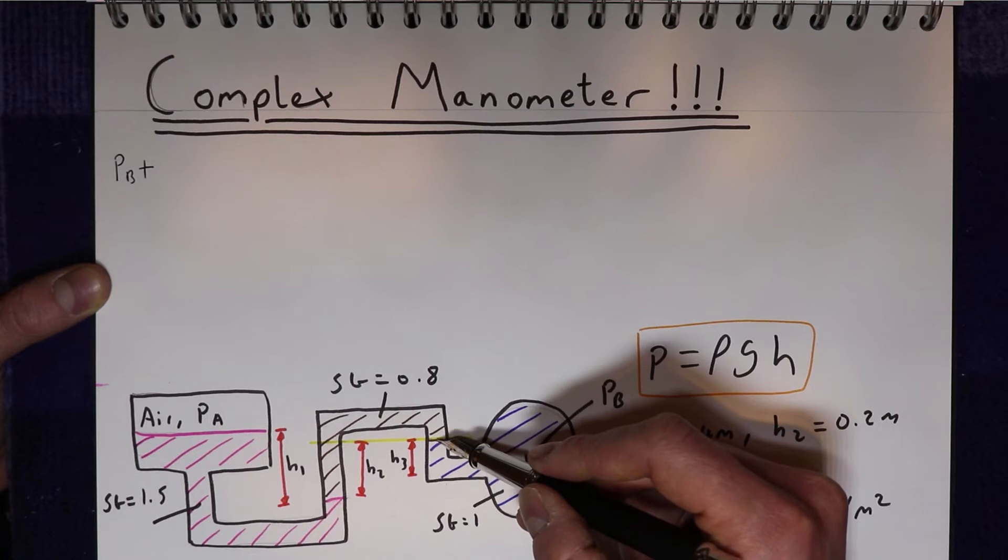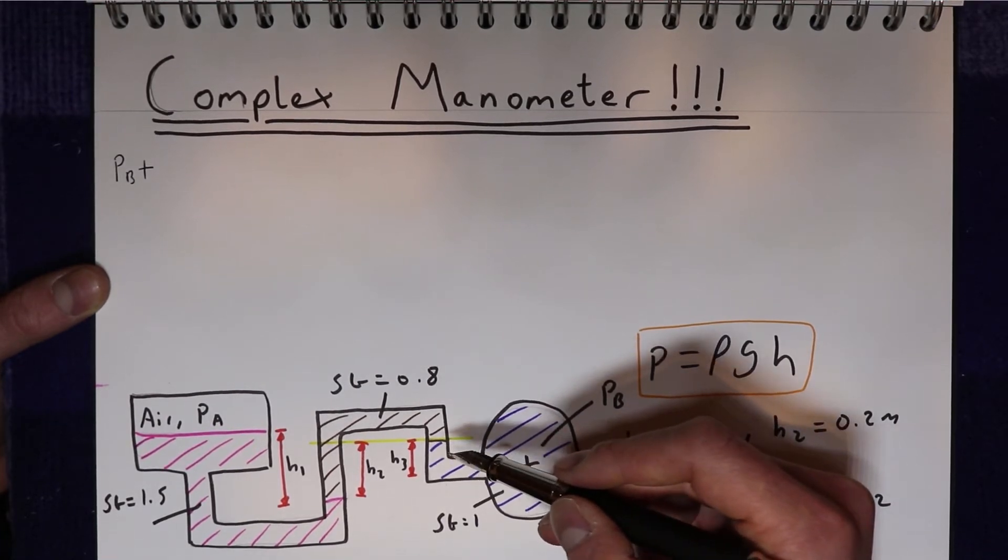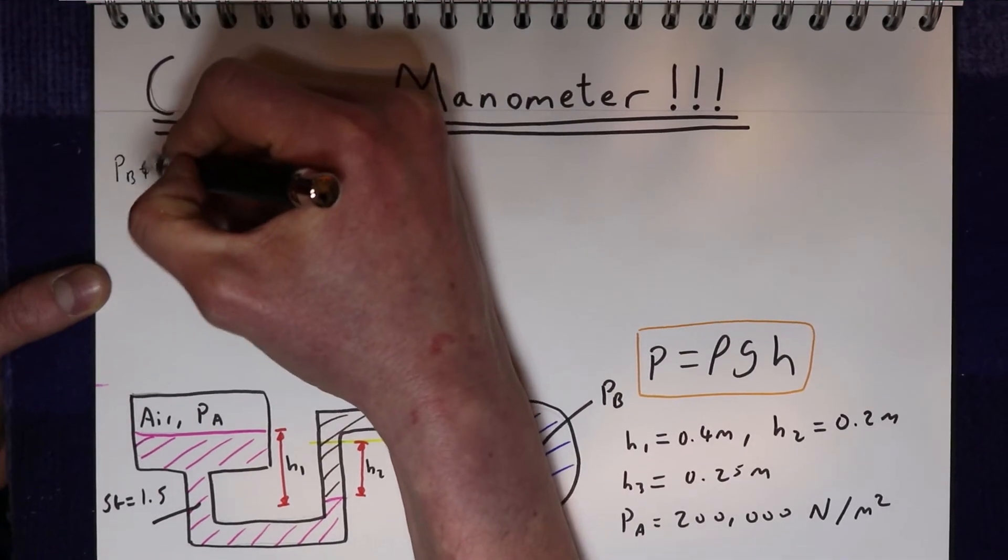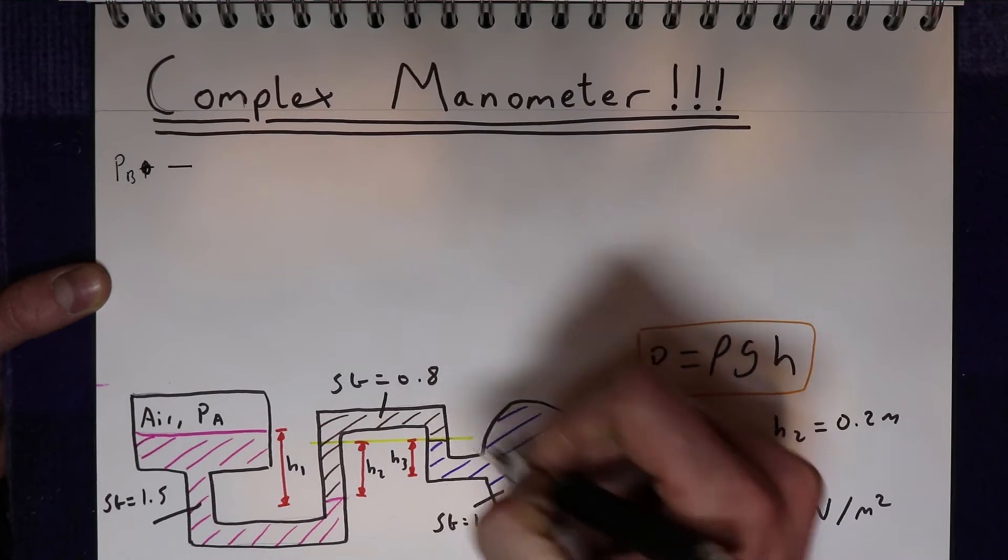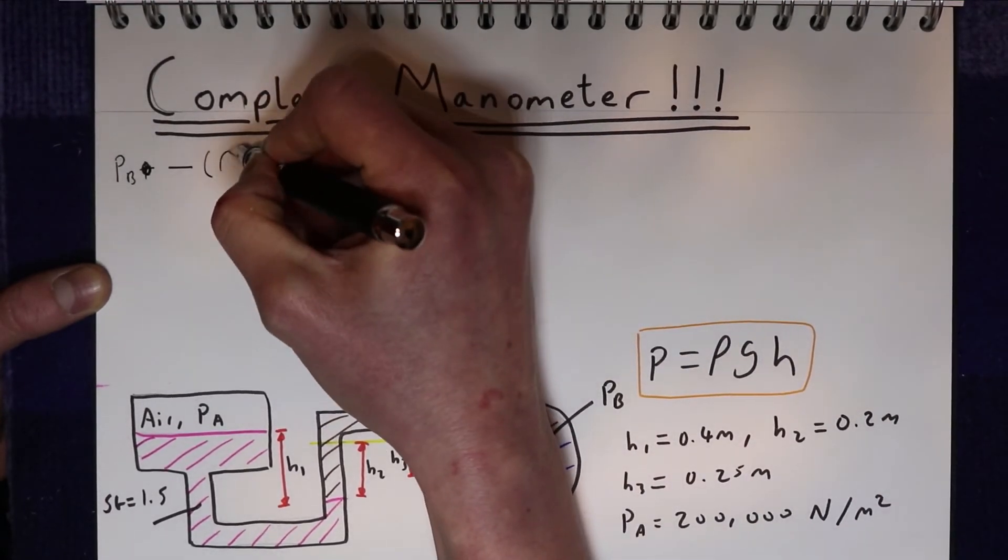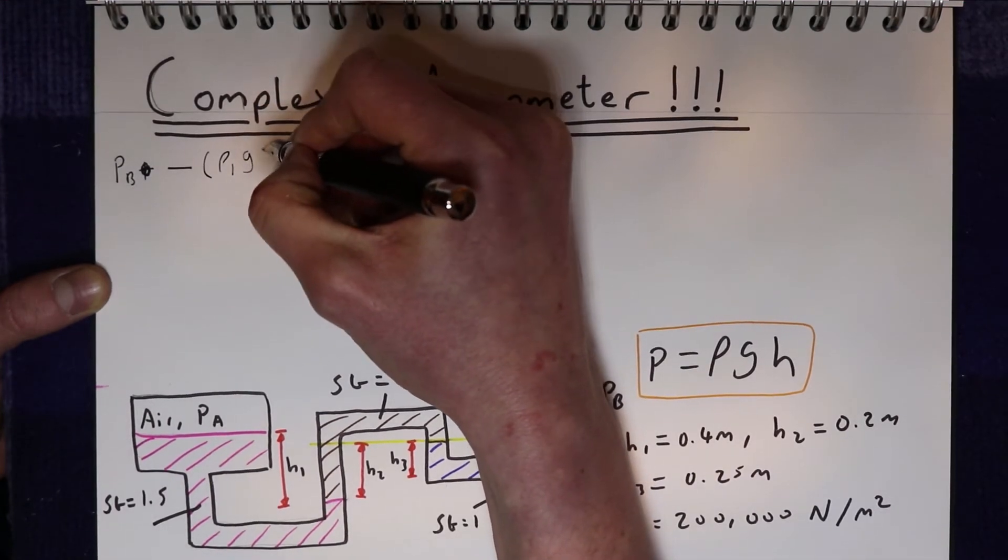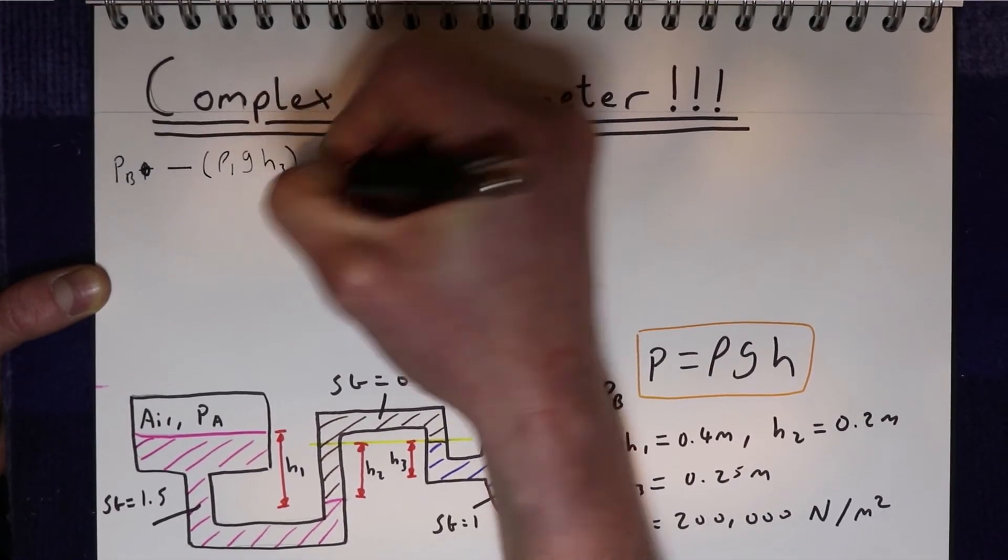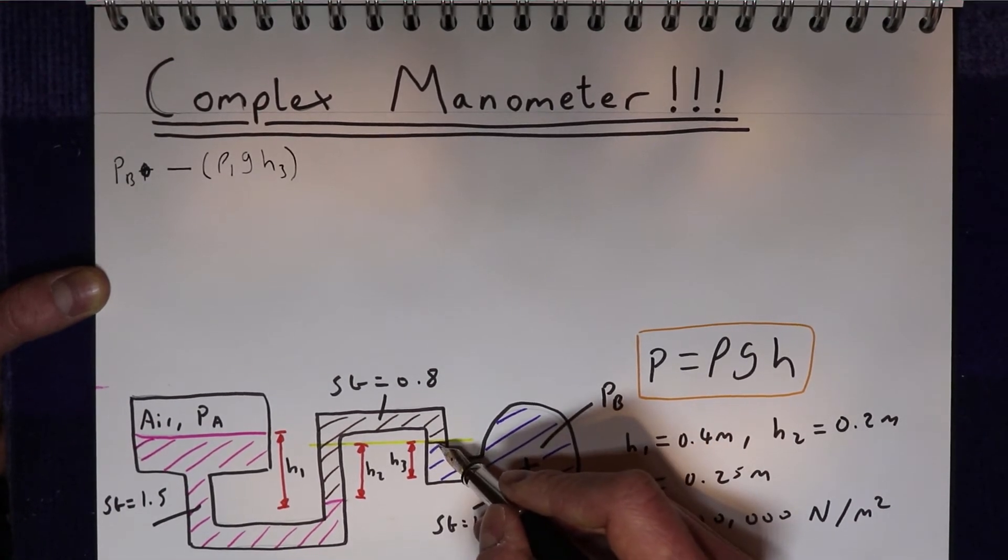So if you imagine you're swimming from this pipe up to this point, as you move up then the pressure will go down on you because there's less fluid above you. So what we're going to do is instead of adding we're going to minus the density of this fluid, which we'll call density 1, times by gravity times by h3. So that is the total pressure pushing on this side of the line.